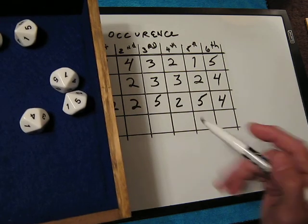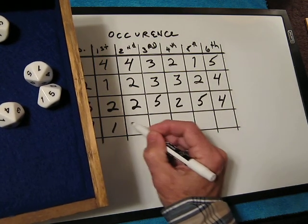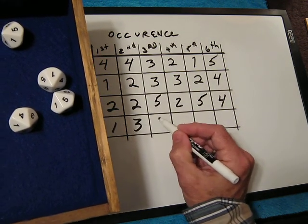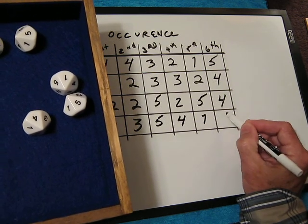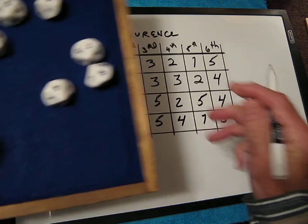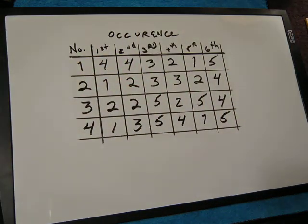So let's put that on number four: one, three, five, four, one, five. Okay, so now we have our new set of rules for the functioning of the four rotational numbers.